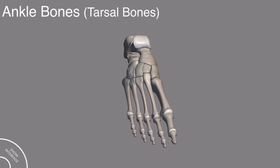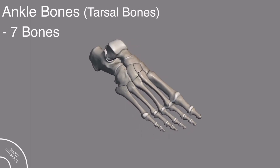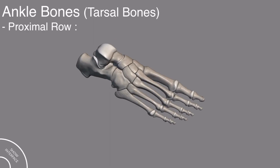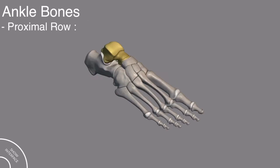The ankle bones are seven bones and we have divided them into two rows. The first one is the proximal row and the second one is the distal row. The proximal row includes two bones: the talus bone and the calcaneus bone. This yellow bone is the talus bone and this is the calcaneus bone.